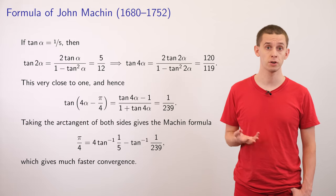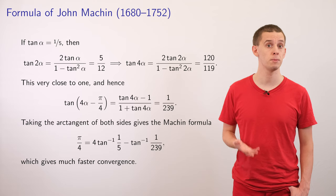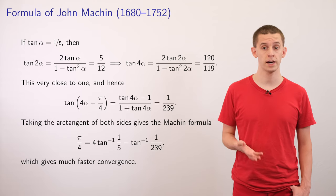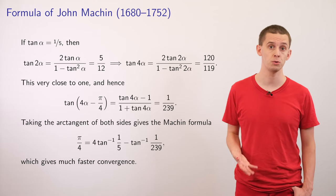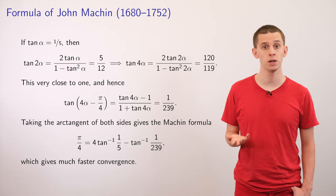And that value is very close to 1. And using a further trigonometric formula, we can write down that if we look at tan of 4 alpha minus pi over 4, then that actually works out to be 1 over 239.